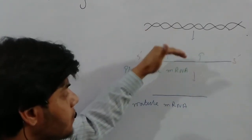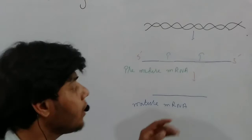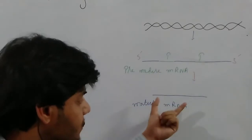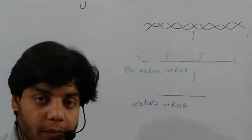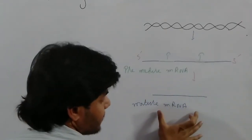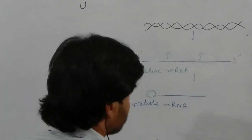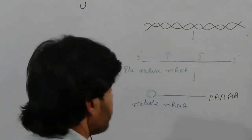Remember, this same process does not occur inside the prokaryotic cell. Inside the prokaryotic cell, DNA is transcribed to produce RNA, and from RNA we get directly protein. But in the eukaryotic cell, this RNA is further processed — 5' capping occurs, 3' polyadenylation occurs — and after that we get the mature mRNA. This mature mRNA now leaves the nucleus and is present inside the cytoplasm of the cell. The 5' capping and 3' polyadenylation with 200 to 250 adenine nucleotides added are already done.